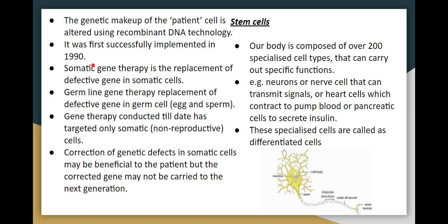There are two types of gene therapy. In somatic gene therapy, the defective gene in body (somatic) cells is corrected. In germ line gene therapy, the reproductive cells — egg and sperm — have their genes replaced. Correcting somatic cells benefits only the patient, whereas germ line gene therapy can be carried forward to future generations.